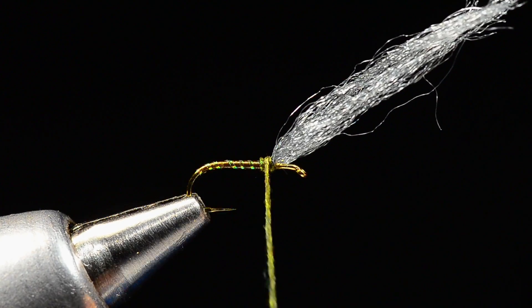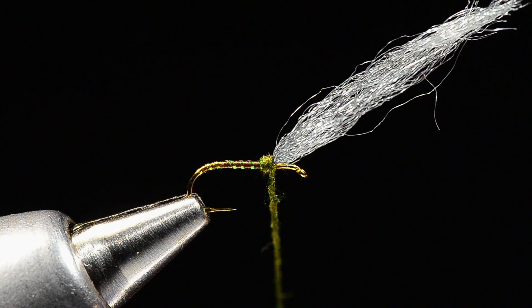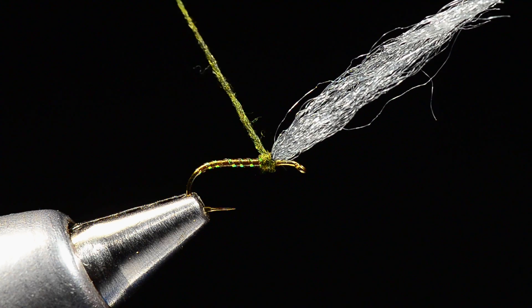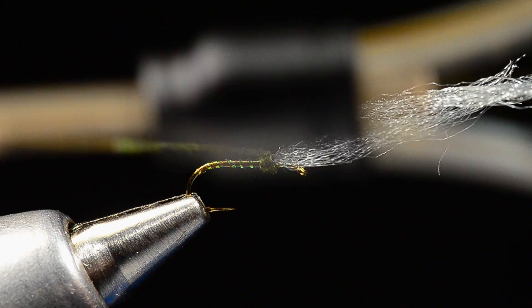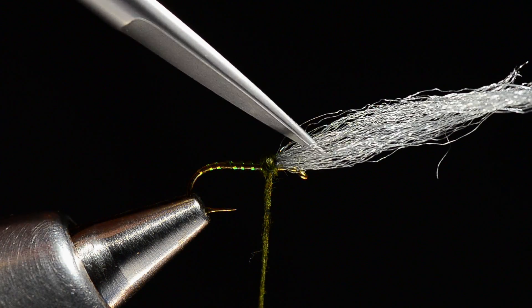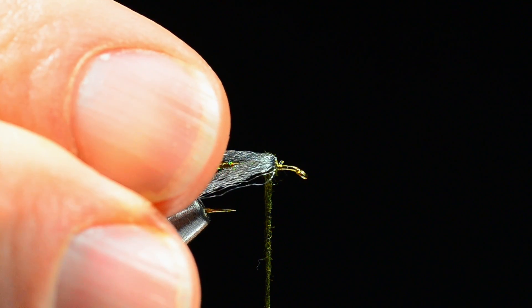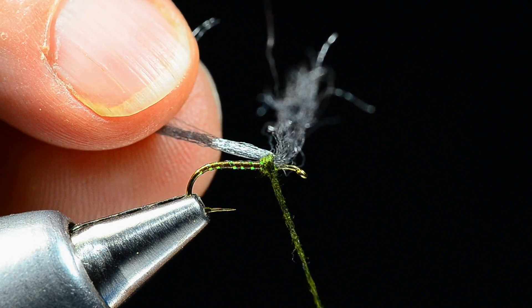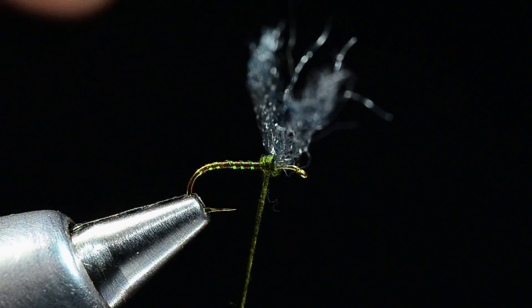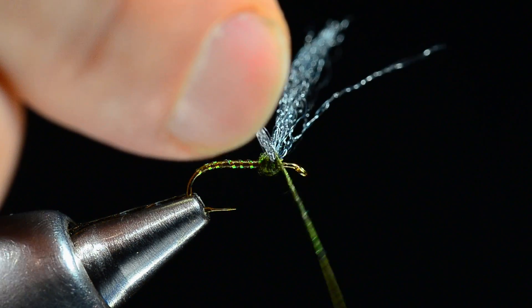Then I'm going to use this dubbing to build this ball mostly behind these wings. This will do a couple of things, that's going to help to separate those wings as they sweep back, but also leave us some room in front of the wing to tie the hair wing and hackle in. I will finish off with a couple of figure eight turns.